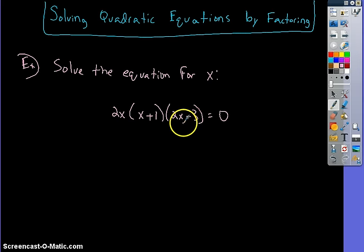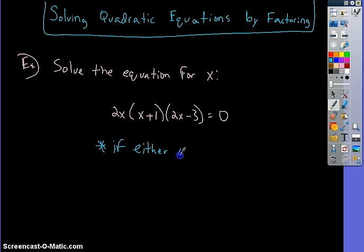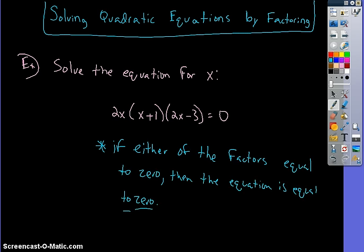If this piece becomes 0, we essentially have 0 times some number times some other number, and 0 times any number equals 0. So if either one of these factors equals 0, then the equation has to be 0. If either of the factors equal to 0, then the equation is equal to 0. I'll take each factor and figure out what value of x makes each factor 0.